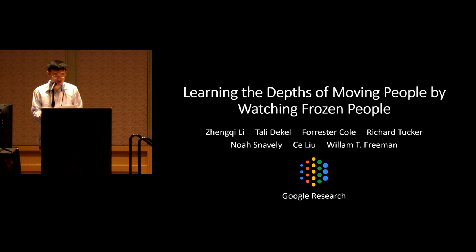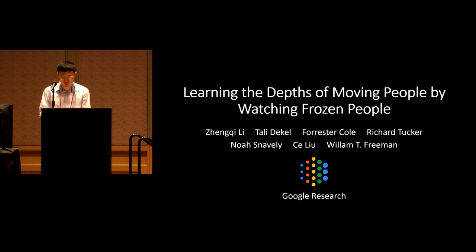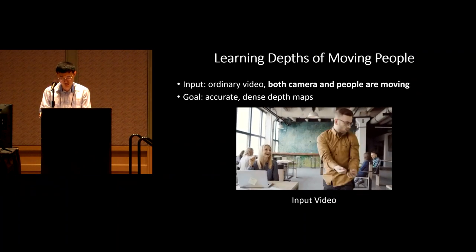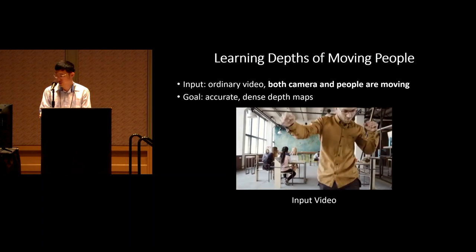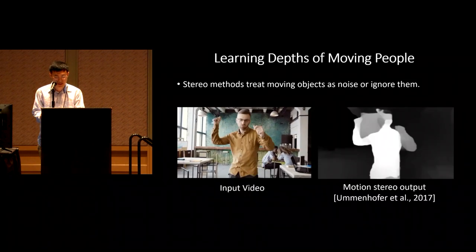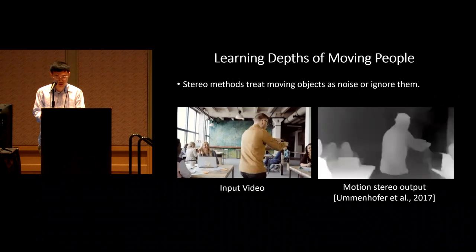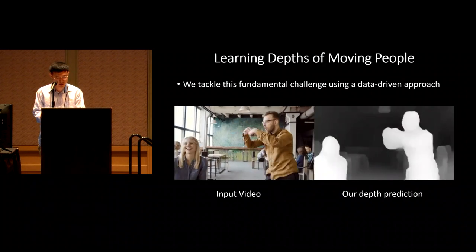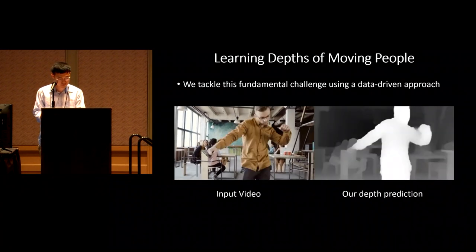I'm from Cornell. I present our work on learning the depths of moving people by watching frozen people, done during an internship at Google Research. Our goal is to predict dense depth maps from video where both the camera and people are freely moving. Classical stereo algorithms assume rigid scenes, requiring static scenes or multi-camera systems. Such methods treat moving objects as noise or ignore them, leading to incorrect depth results.